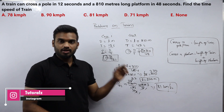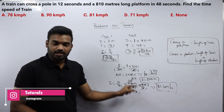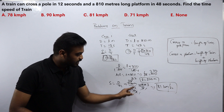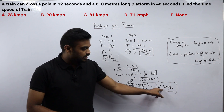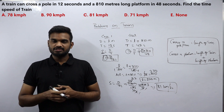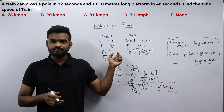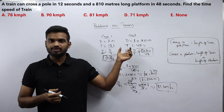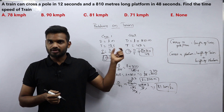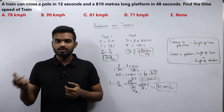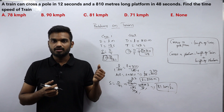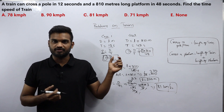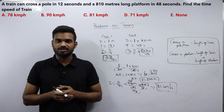Always check whether the answer is required in meter per second or kilometer per hour and convert accordingly. The answer here is 81 km/h. That's it for this video. The only difference between speed, time and distance and the trains concept is that here the total length of the train is included in the total distance. Try to solve more problems to get faster at solving train problems. For more tutorials, please subscribe to the channel. Thank you.